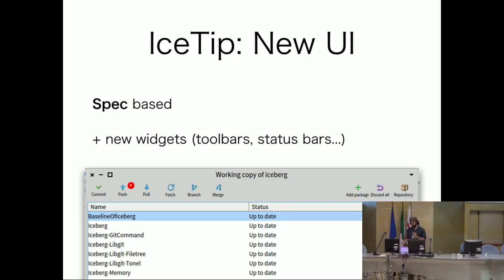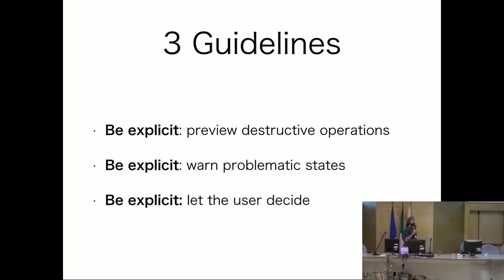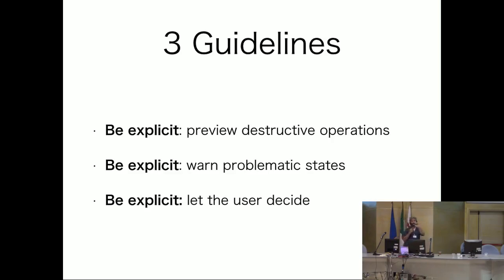What are the three guiding principles for the new UI? We wanted to be explicit, explicit, and explicit. One of the things we want is to preview destructive operations — we don't want people to destroy their own code without knowing it. If I am going to pull code into your image, I will tell you before, and you will tell me yes, I want to delete that class — otherwise I am not going to delete it. We also want to warn about problematic states, as shown by the red status in the project and the repair buttons.